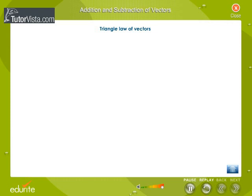Triangle law of vectors. Let a particle be at the points A, B, and C at three successive times T, T dash, and T double dash respectively. Vector AB is the displacement vector from time T to T dash. Vector BC is the displacement vector from time T dash to time T double dash. The total displacement vector AC is the sum or the resultant of individual displacement vectors AB and BC.